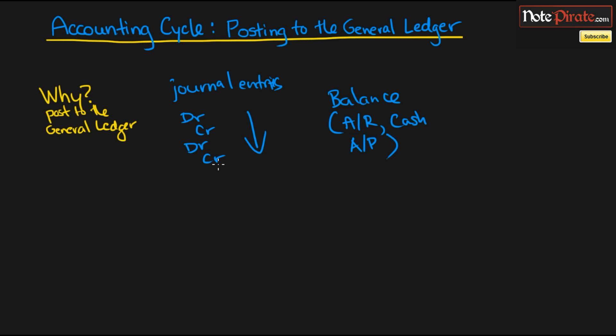All journal entries provide us with is the actual physical reporting of every single transaction. So the point of the general ledger is to come up with a balance for every single account within your company.